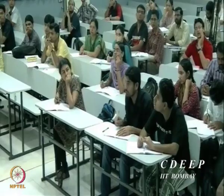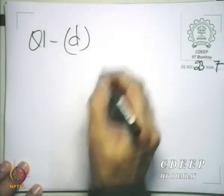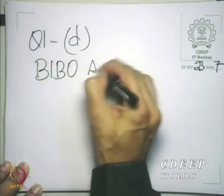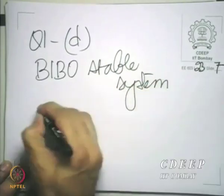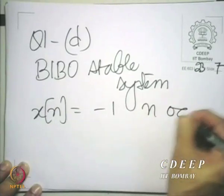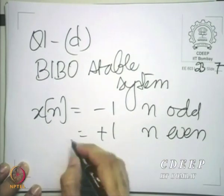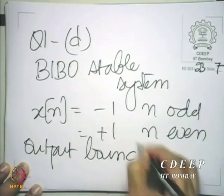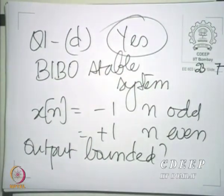Question 1 part d: in the system y[n] = n·x[n], could a bounded input produce a bounded output? Yes — for example, if you give x[n] = δ[n], the unit impulse, it produces all zeros. So in an unstable system, it is not necessary that every bounded input produces an unbounded output; there is at least one bounded input which produces an unbounded output. Question 1d also asked: given a BIBO stable system with input x[n] = -1 for odd n and 1 for even n, is the output bounded? The answer is yes — the input is bounded by 1, so the output must be bounded.